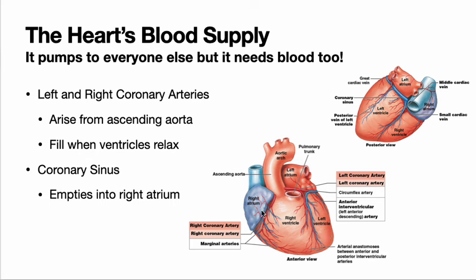The higher up the blockage — the closer to the aortic arch it is — the more muscle would be robbed of that blood. The further down the branches of these coronary arteries, the smaller the area of the heart that would be impacted. There is also the coronary sinus, which is a large vein that empties directly into the right atrium, draining the heart and dumping that blood into the right atrium, which will eventually flow into the right ventricle and head out to the lungs in order to pick up oxygen.